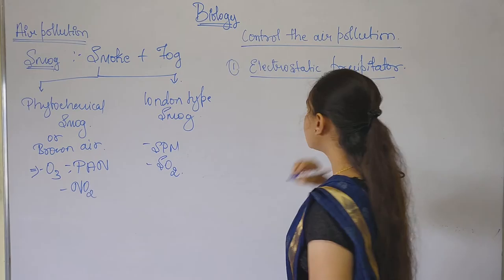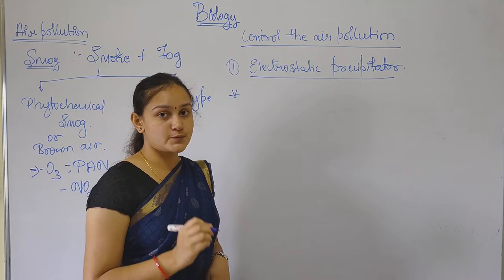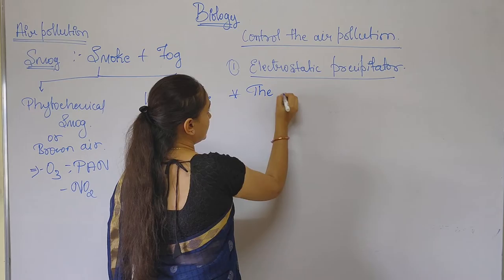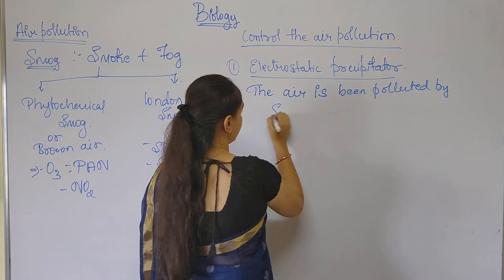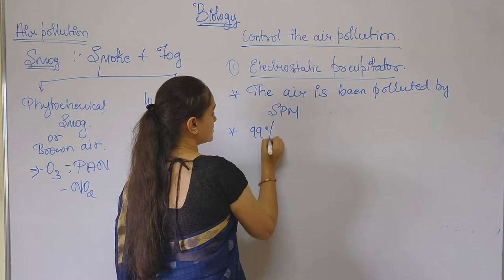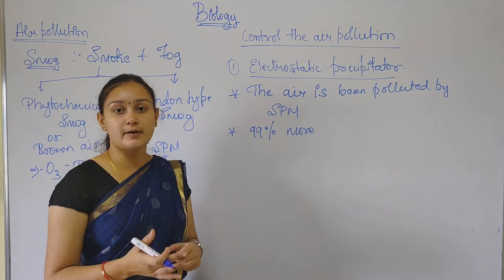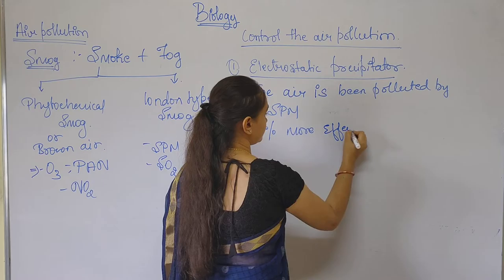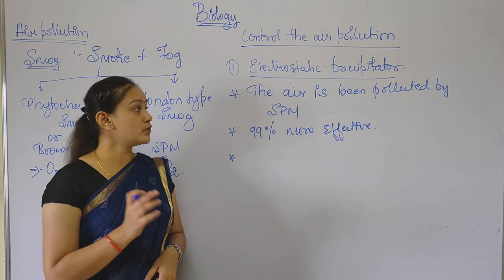The first type is the electrostatic precipitator. This method is used when the air is polluted by suspended particulate matter. It is 99 percent effective — 99 percent of the suspended particulate matter can be removed from the air.